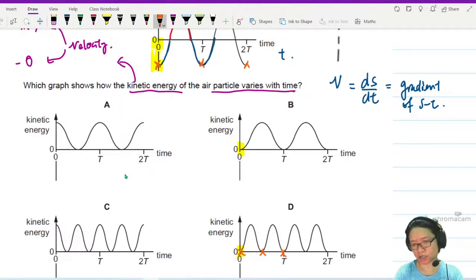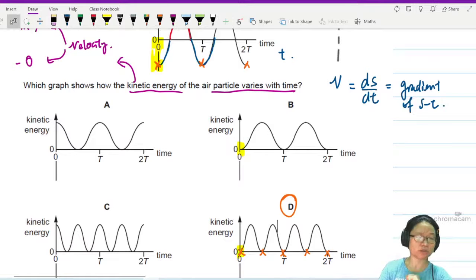Do we have five instances? One, two, three, four, five. Yes, answer is D. Okay, where is maximum KE? Let's just double check.